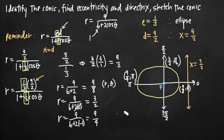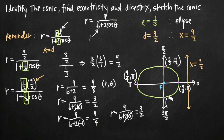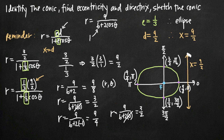At theta equals 3π/2: cos(3π/2) equals 0, so again the denominator is 6 and r equals 9/6 equals 3/2. The point is (3/2, 3π/2). Labeling each of these four intersection points makes our sketch much more accurate. That's how you use a polar equation like this one to identify the type of conic section, find its eccentricity, find the equation of its directrix, and sketch a graph of the given conic.